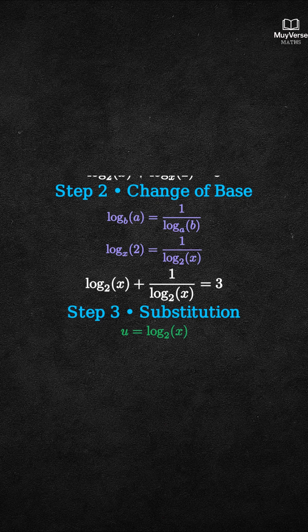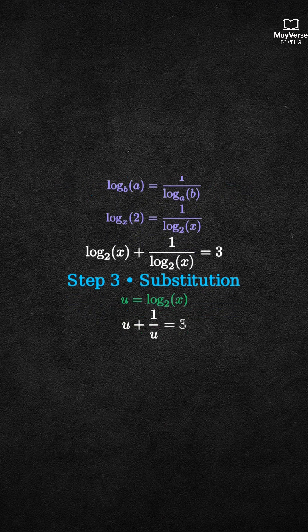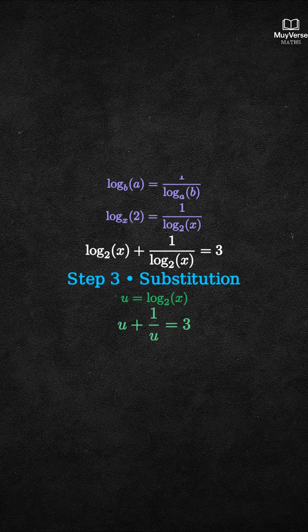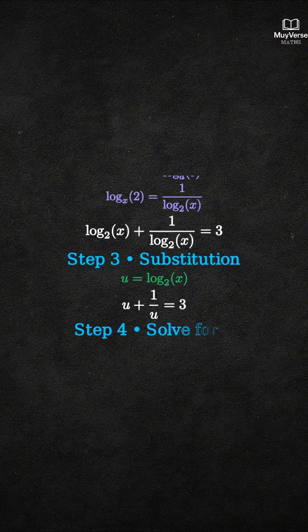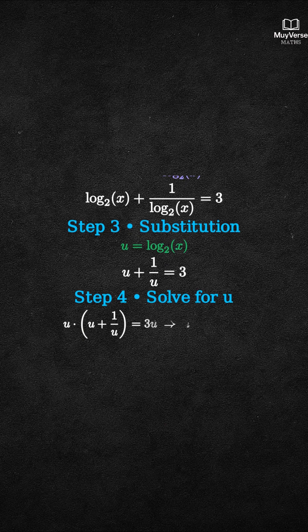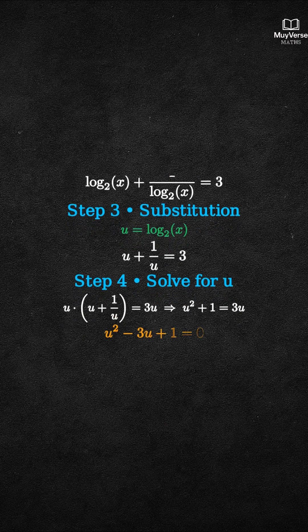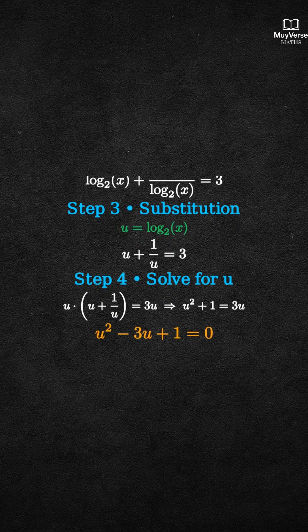Step 4: solve for u. Multiply both sides by u — we get u squared plus 1 equals 3u. Bring everything to one side: u squared minus 3u plus 1 equals 0. Use the quadratic formula.